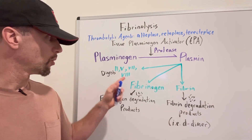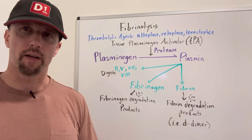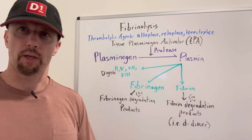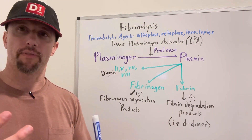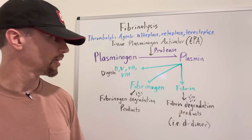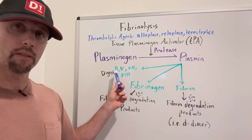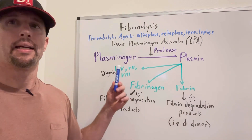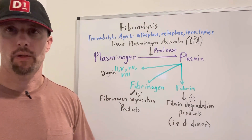Plasmin also digests four of the blood coagulation proteins that are involved in the clot process, which are thrombin (factor two), and then factors five, seven, and eight as well.